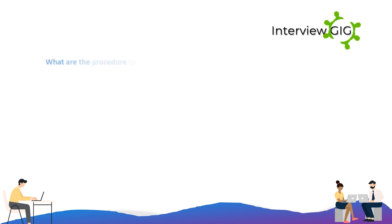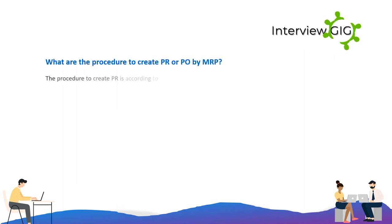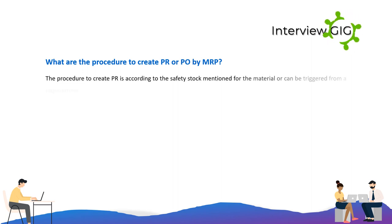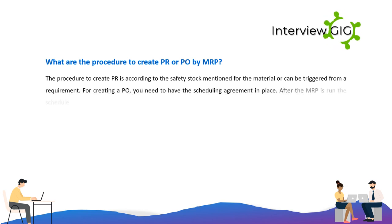What is the procedure to create PR or PO by MRP? The procedure to create a PR is according to the safety stock mentioned for the material, or it can be triggered from a requirement. For creating a PO, you need to have the scheduling agreement in place. After MRP is run, the schedule lines are generated, which constitute the PO.